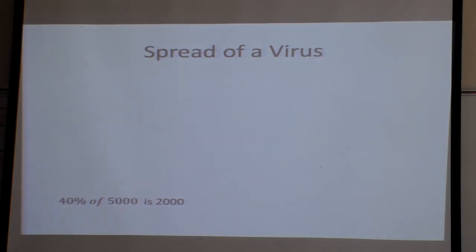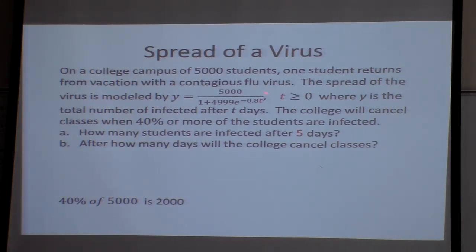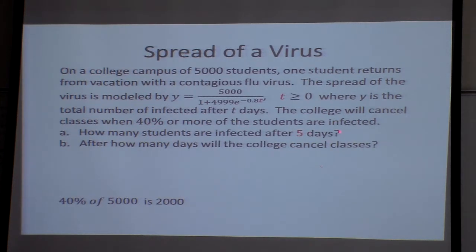So let's talk about a spread of a virus. Here's our question: on a college campus of 5,000 students, one student returns from vacation with a contagious flu virus. The spread of the virus is modeled by this formula — they're going to give you all these formulas. T is time, where T is number of days, and Y is the total number affected after T days. The college will cancel classes when 40% or more of the students are infected.